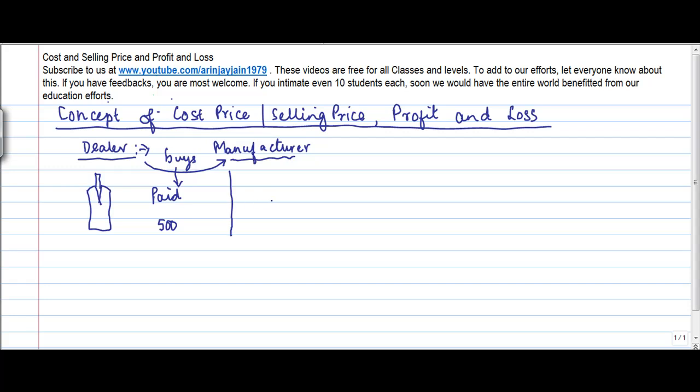Now once he got this bat he incurred certain expenses on this bat. The expenses could be like suppose the manufacturer was based out of Delhi and the dealer was based out of Dehradun. He would have incurred certain expenses, let's say the transport expenses, packing expenses, maybe some kind of repairs etc. Let's say he incurred 50 rupees on this.